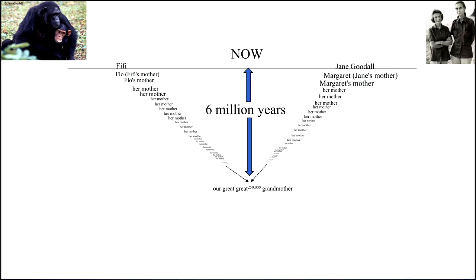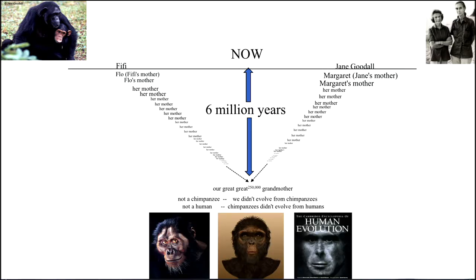Now you could say that great-great-great-great-great-grandmother was not a chimpanzee because we didn't evolve from chimpanzees and it also wasn't a human. Chimpanzees did not evolve from humans. But if you're gonna say we evolved from chimpanzees it's just as logical to say chimpanzees evolved from humans and so neither of them are correct because the common ancestor looks something like this.